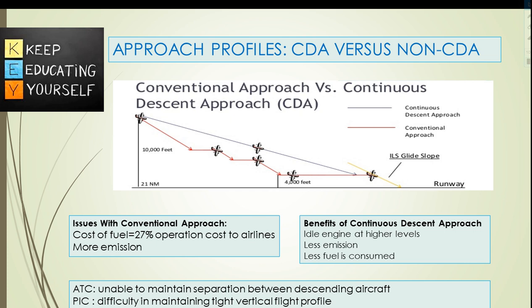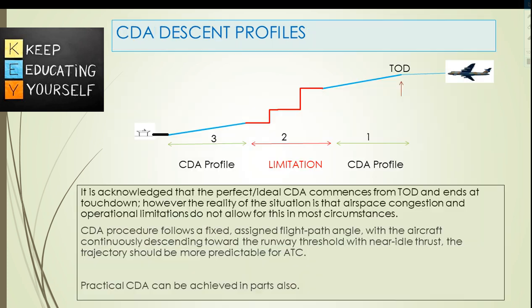Benefits of continuous descent approach: idle engine at higher levels, less emission, and less fuel consumed. Practical difficulties faced by ATC: the controller will be unable to maintain separation between descending CDA aircraft. For the pilot in command, it will be difficult to maintain a tight vertical flight profile. It is acknowledged that the perfect ideal CDA commences from cruise and ends at touchdown.